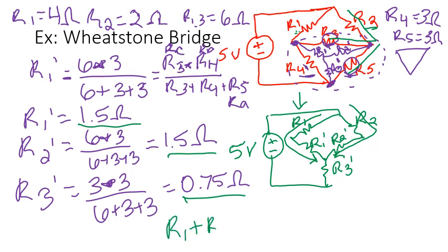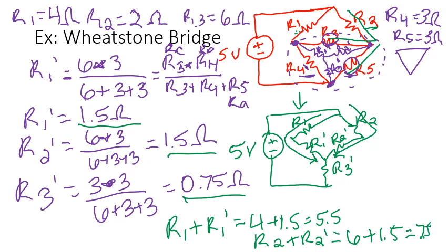So R1 plus R1 prime, R1 was 4, R1 prime is 1.5, that gets me 5.5. And R2 plus R2 prime gets me 2 ohms plus 1.5, that gets me 3.5.